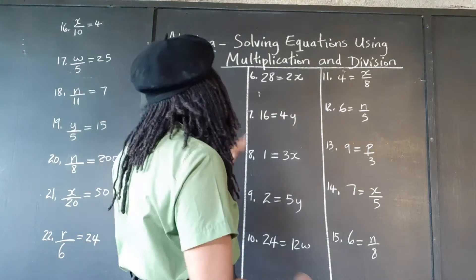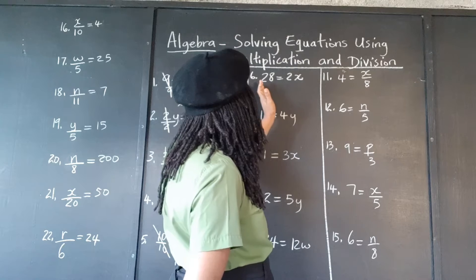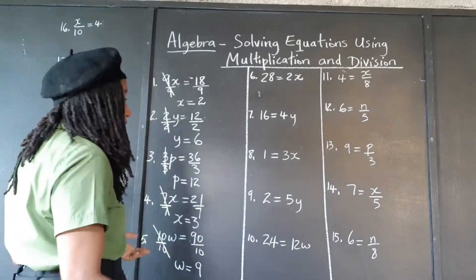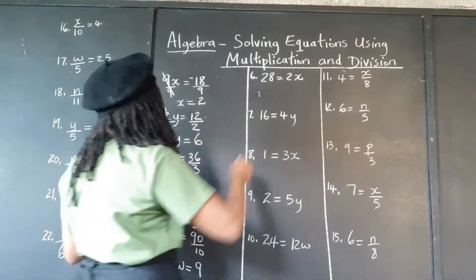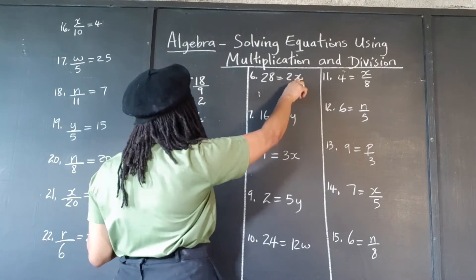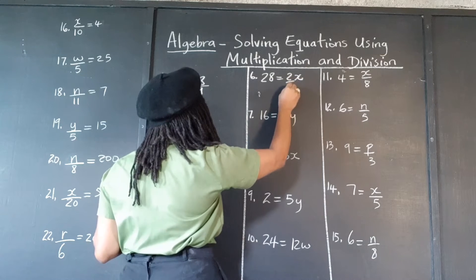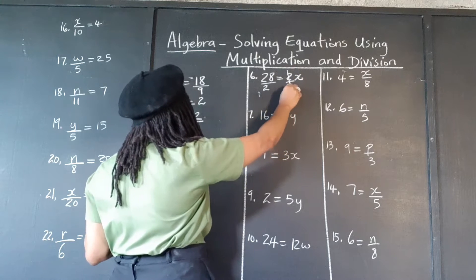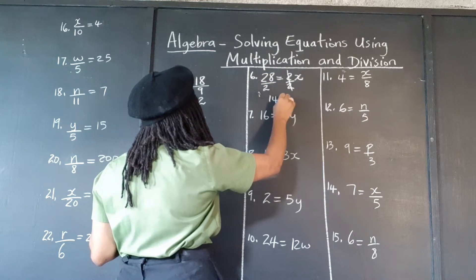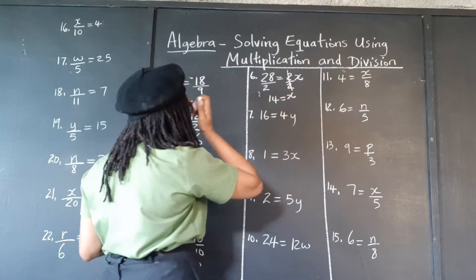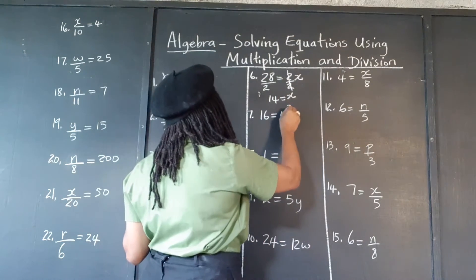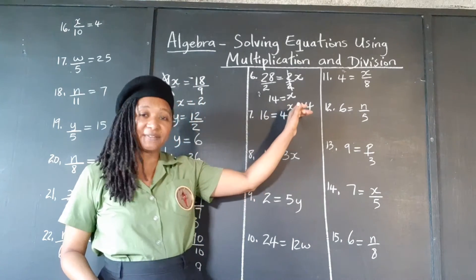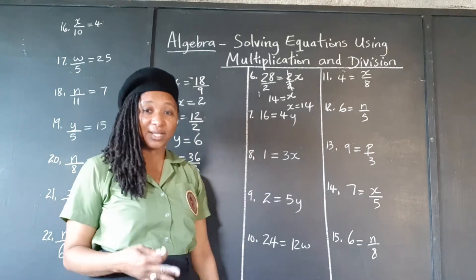Now this time they put the result on the left and the expression on the right, but it doesn't matter — we're still going to do the same principle. We're dividing both sides by the coefficient of x, which is 2. Remember, you have to do it on both sides. The 2s cancel. 28 divided by 2 is 14, so 14 is equal to x. If you wish, you can rewrite this as x equals 14, because we prefer to have the variable on the left and the result on the right — that's the elegant, preferred way of writing our answer.